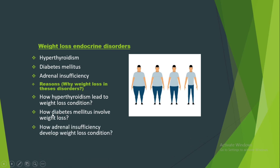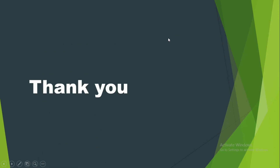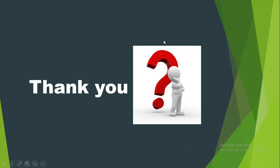The third disorder is adrenal insufficiency. How does it lead to weight loss? Adrenal insufficiency is the condition in which cortisol levels are reduced. Cortisol functions to increase blood glucose levels according to the body's requirement. When cortisol is absent, glucose levels do not increase sufficiently, so the body obtains energy from fats — this is why adrenal insufficiency also causes weight loss. Thank you. If you have any questions regarding this material, you can ask in the comment section.